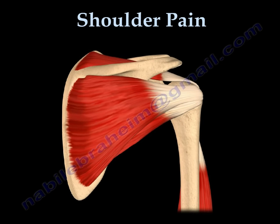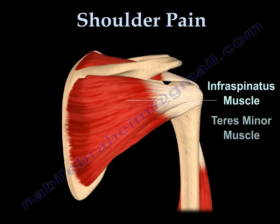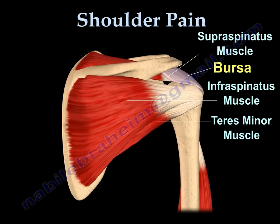From the back, the muscles of the shoulder joint include the infraspinatus and the teres minor muscles. These muscles of the shoulder combine to form a thick cuff important in stabilizing the shoulder as well as elevating and rotating the arm. Elevation of the arm causes squeezing of the bursa located above the supraspinatus tendon and below the acromion.